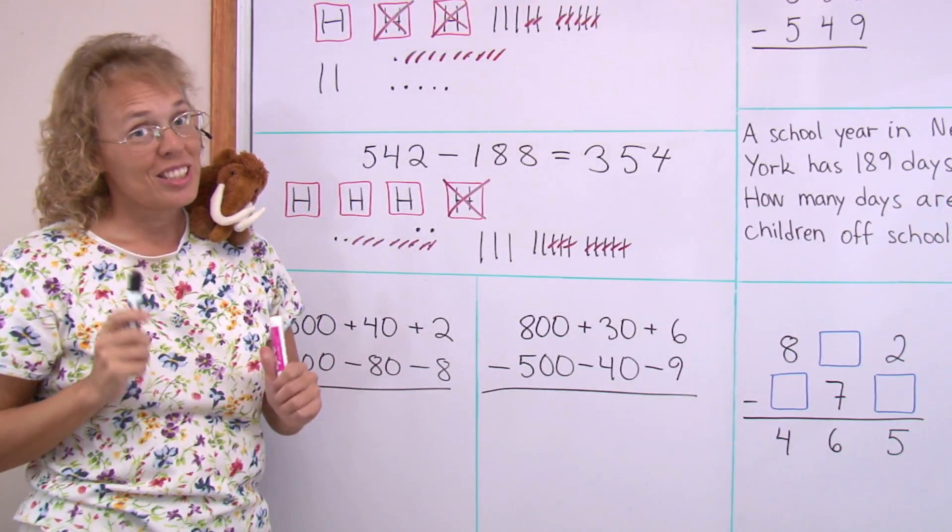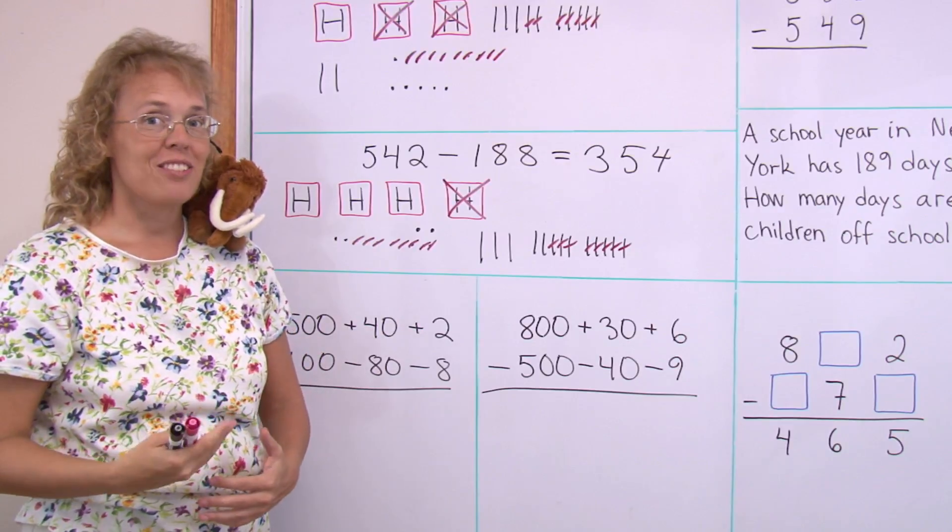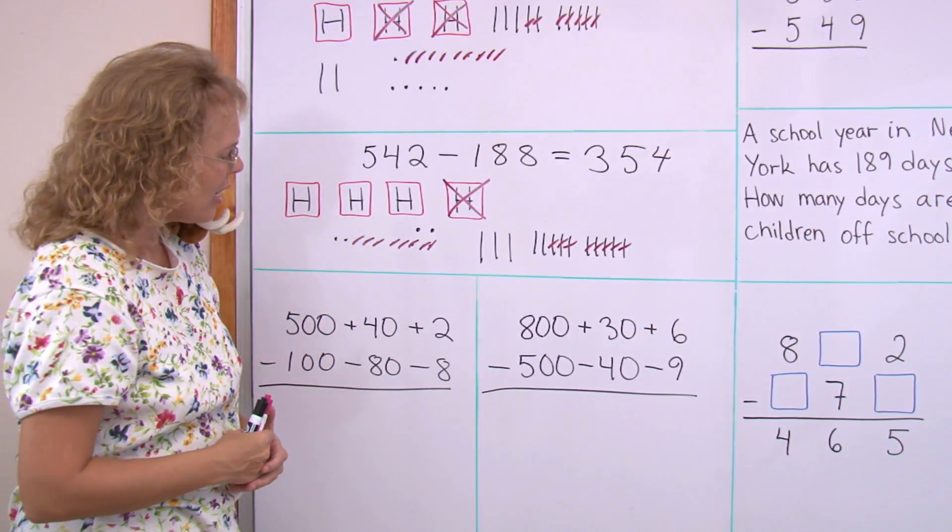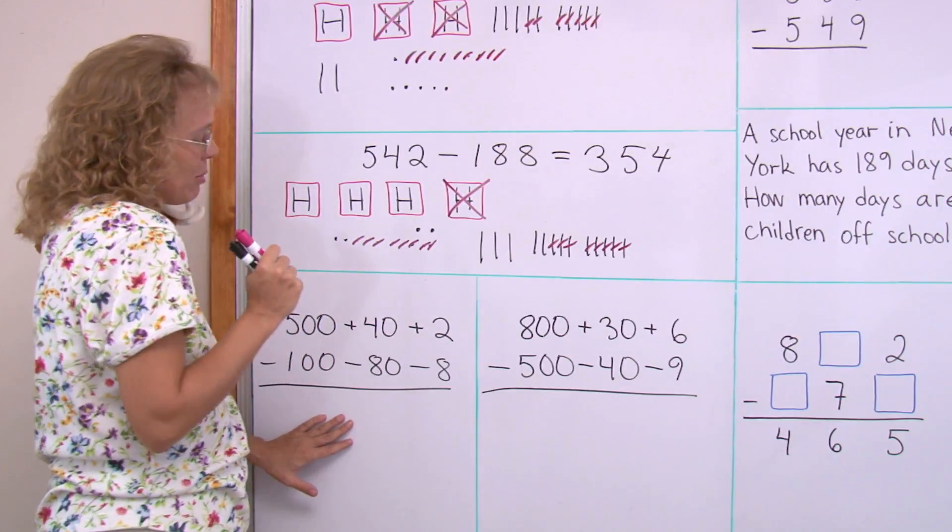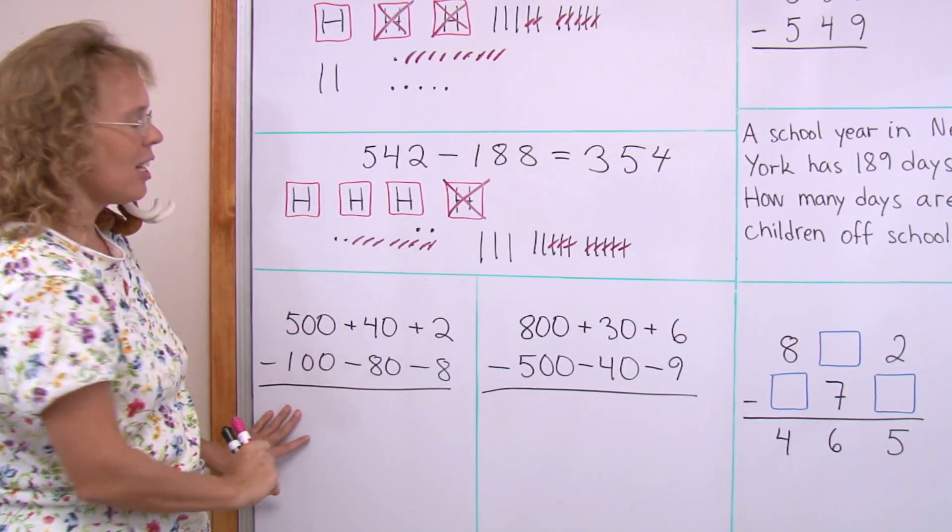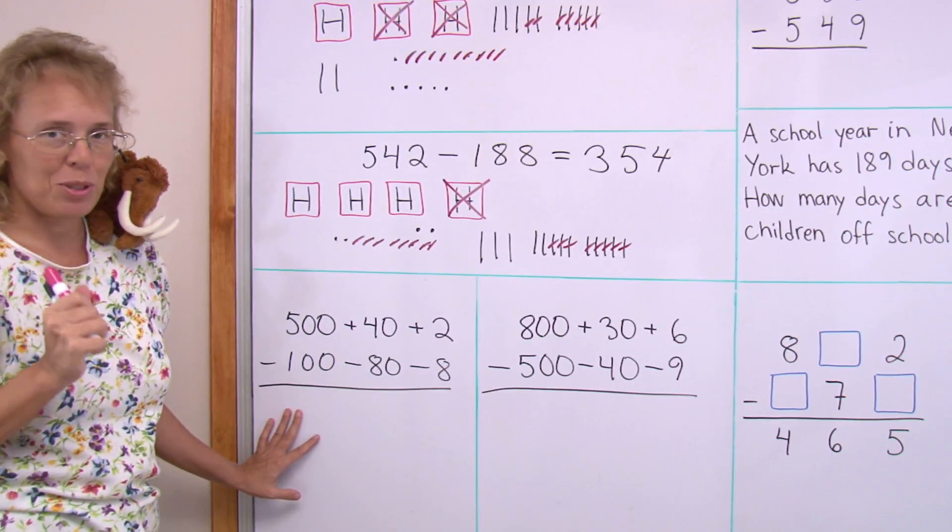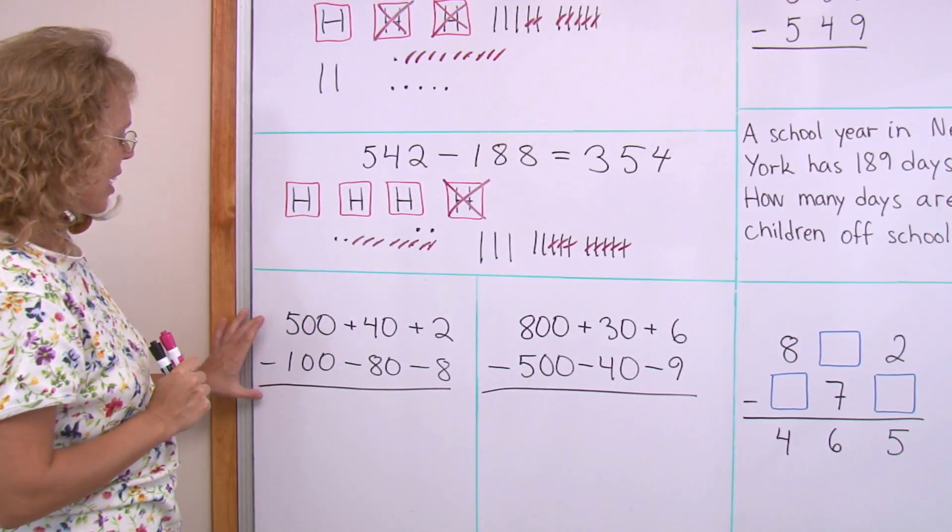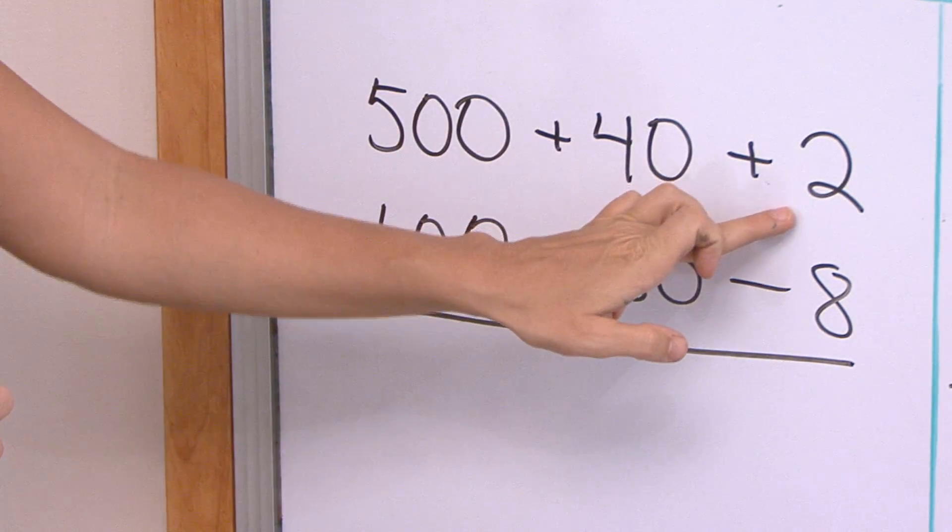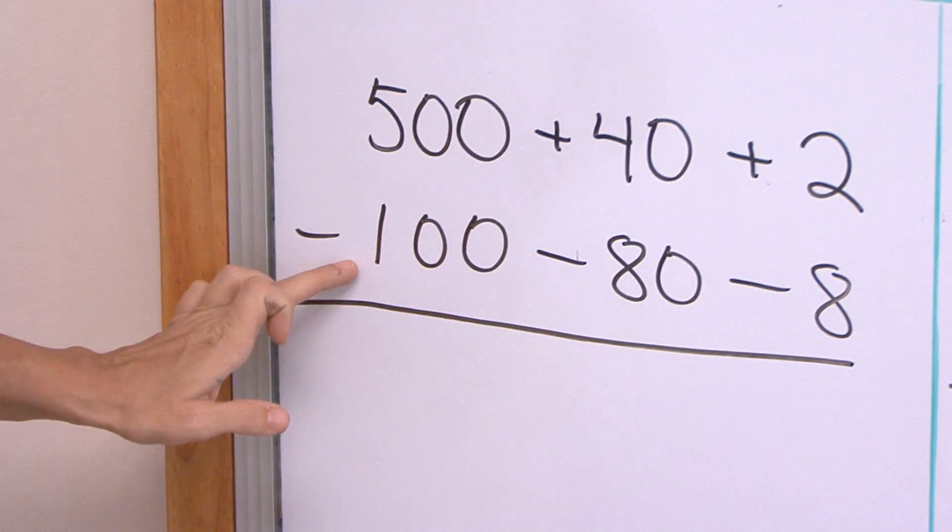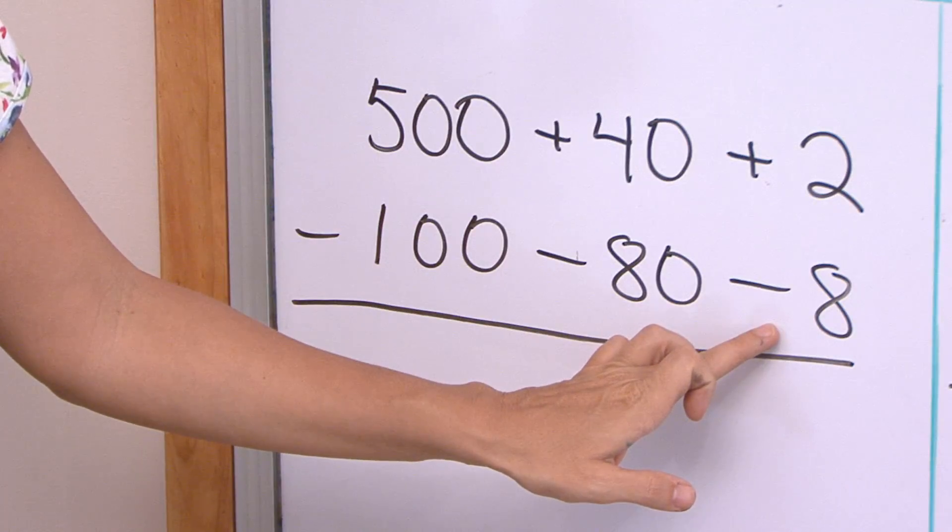And now it's time to learn how we usually write these things down. But not quite yet. I wrote these problems, subtraction problems, using this a little bit different kind of notation just to help you. This is the same problem as here actually. Five hundred forty-two and we subtract one hundred eighty-eight.